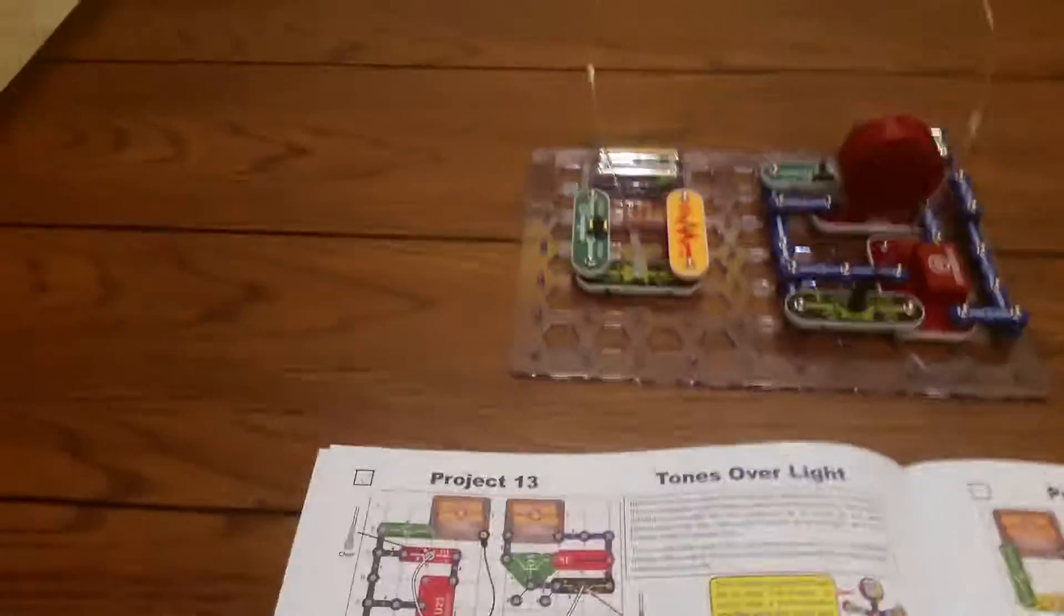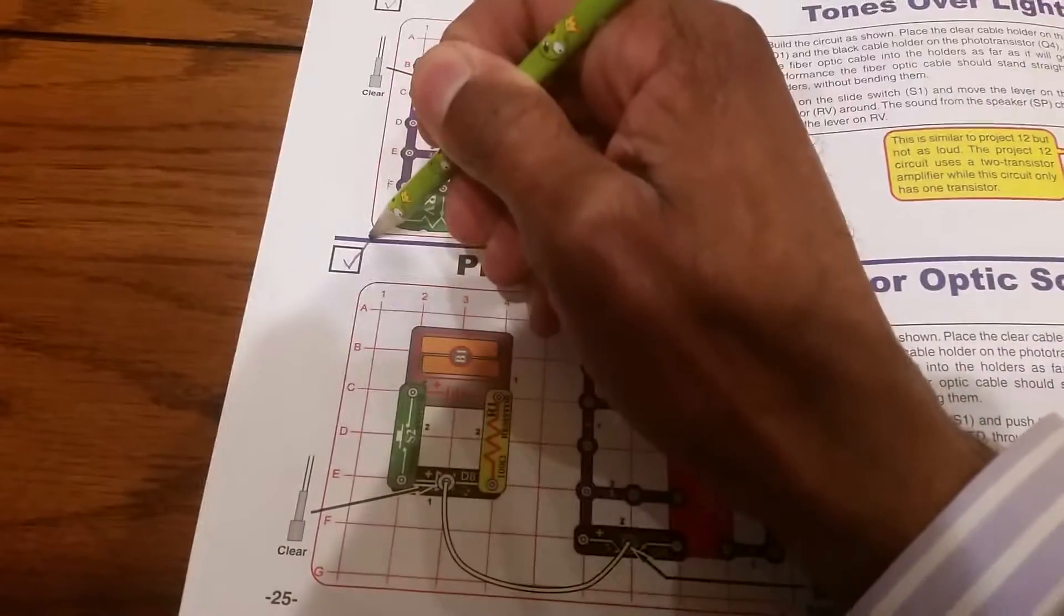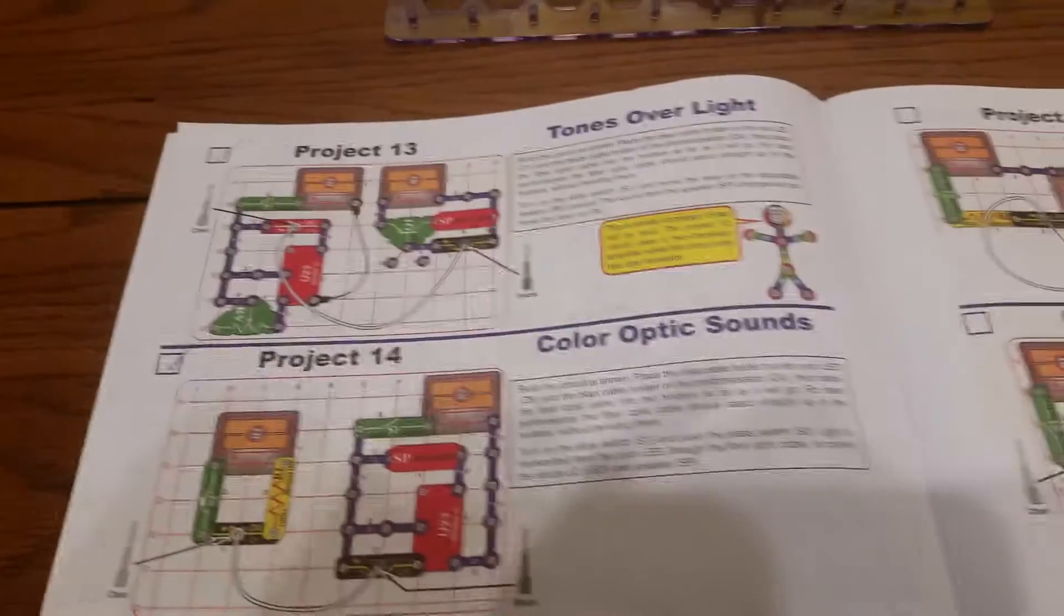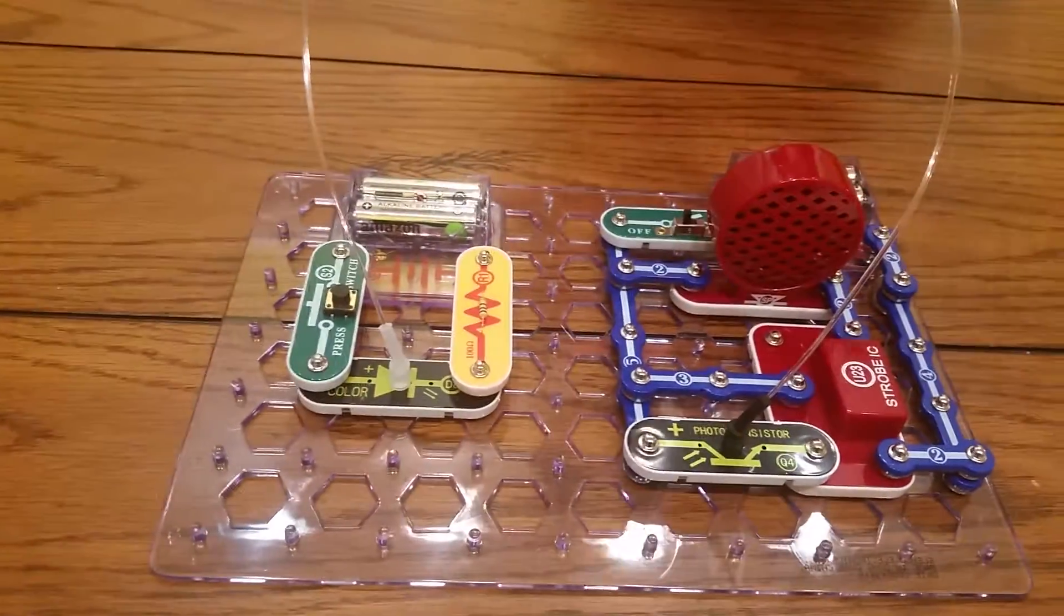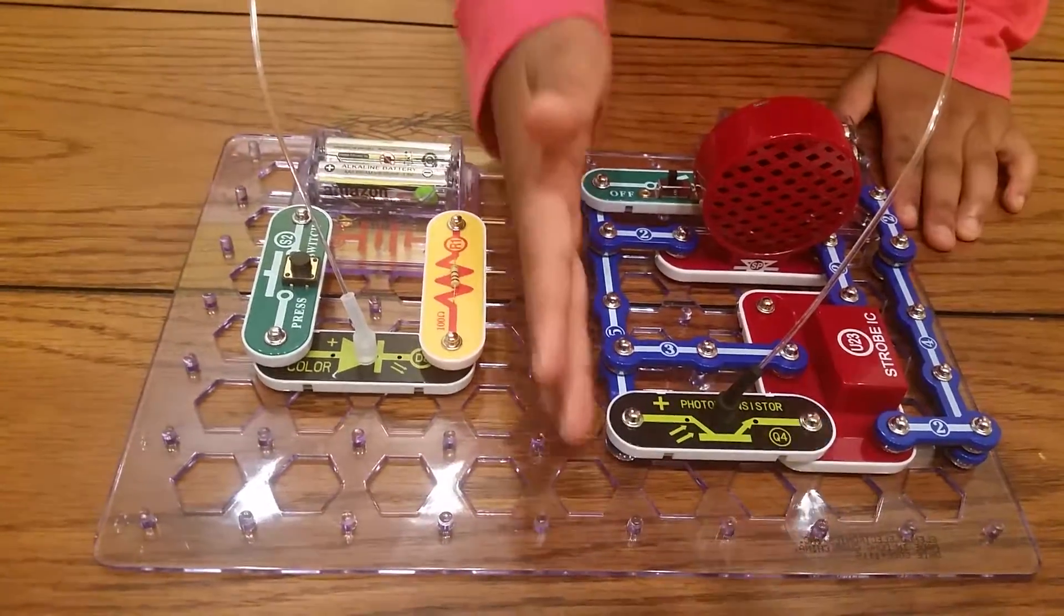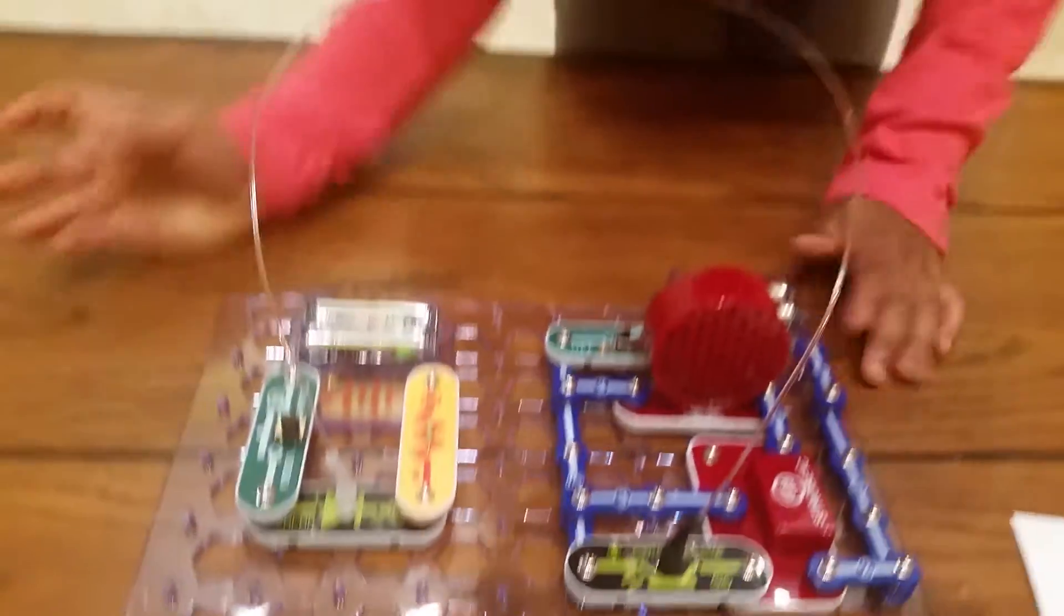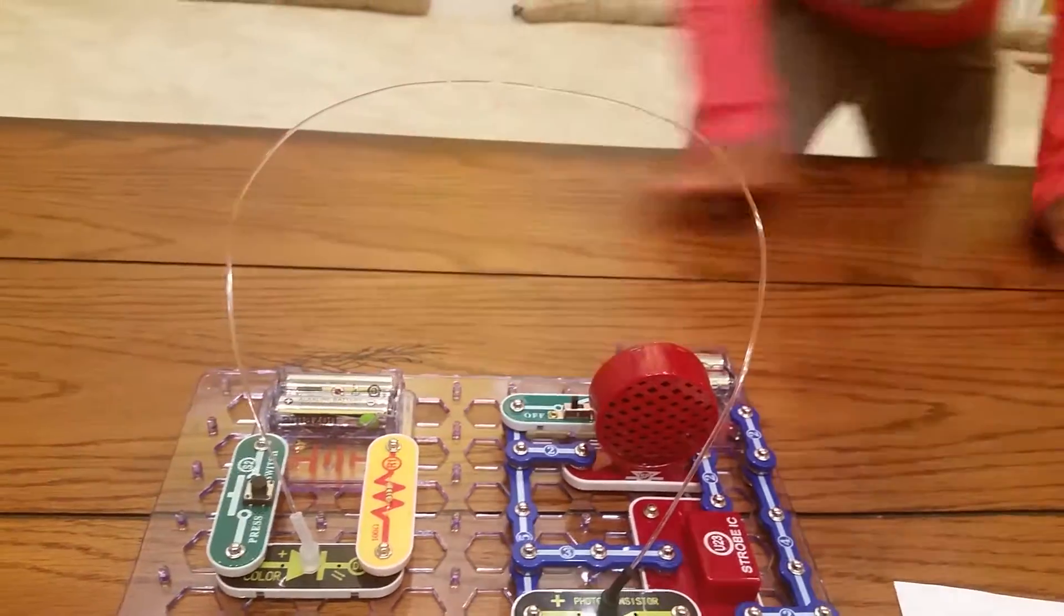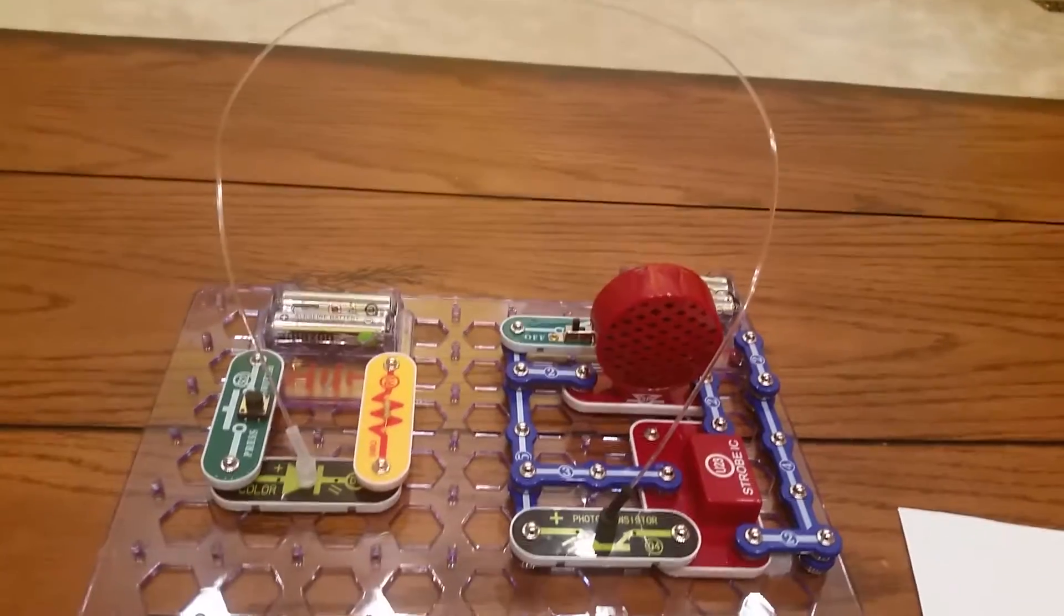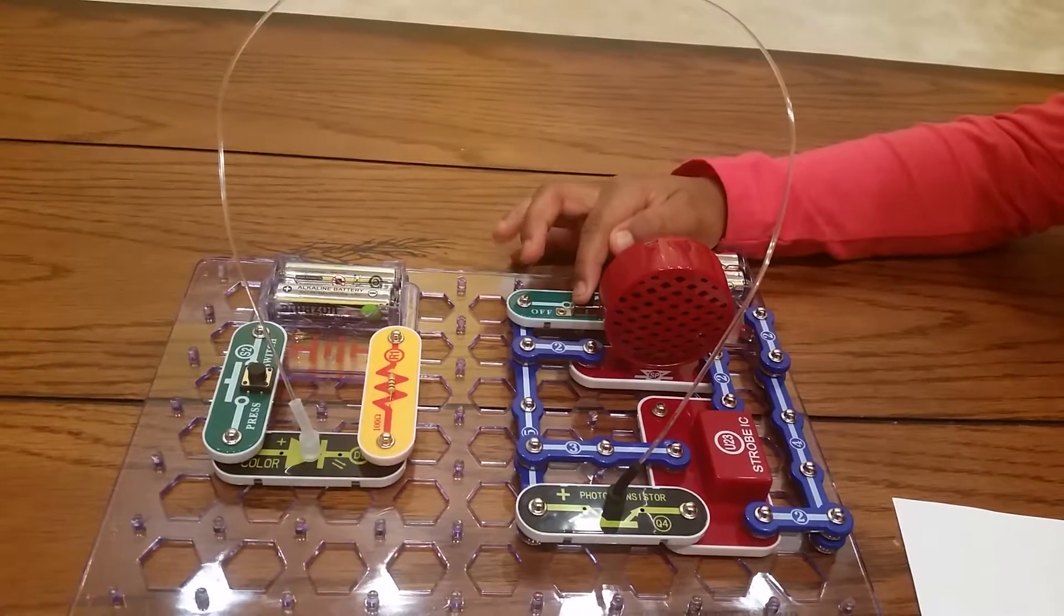And so we'll do project 14 now. Let's go ahead and check it off. It's called color optic sounds. That's right. You want to go ahead and turn on the switch, turn on s1 right behind the speaker.